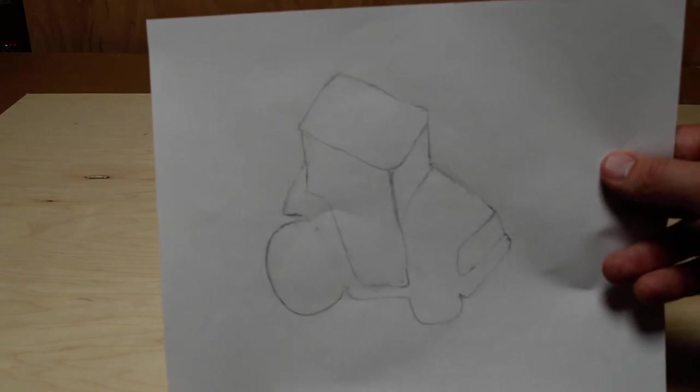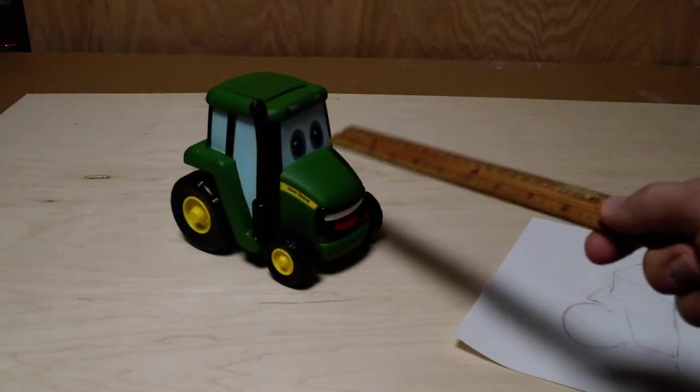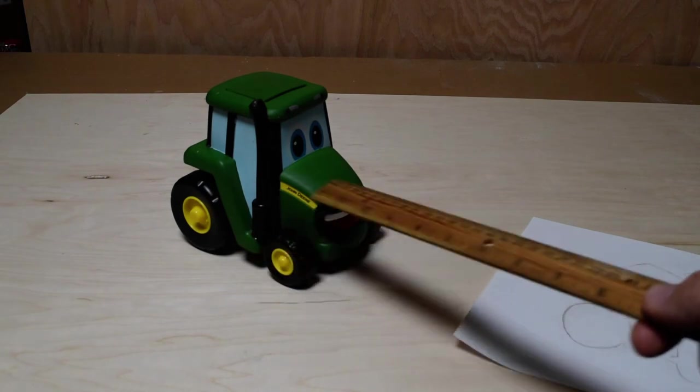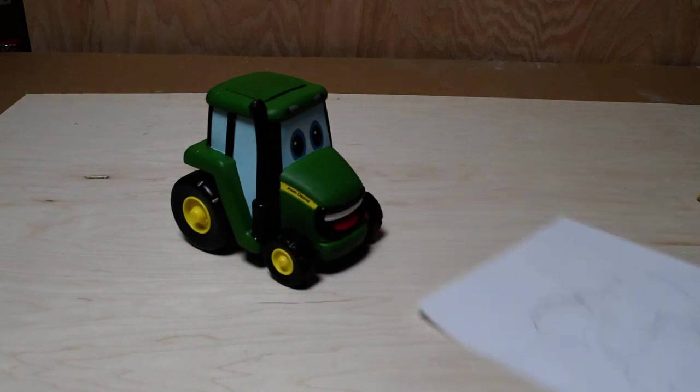Once I added in a few contours for the grill and for where the door and the windows turn on the cab, right here, here, and this one here, then we start to understand what we're looking at.